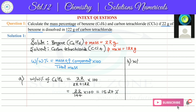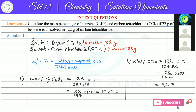Now for the weight by weight percentage of carbon tetrachloride (CCl4): it is 122 divided by (22 + 122), which is 122 upon 144, giving 84.73%. Alternatively, the weight percentage of CCl4 can be obtained directly as 100 minus 15.27, which also gives 84.73%.